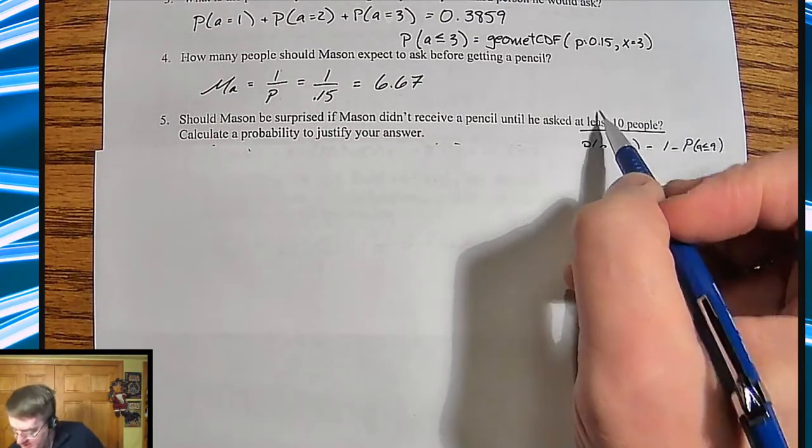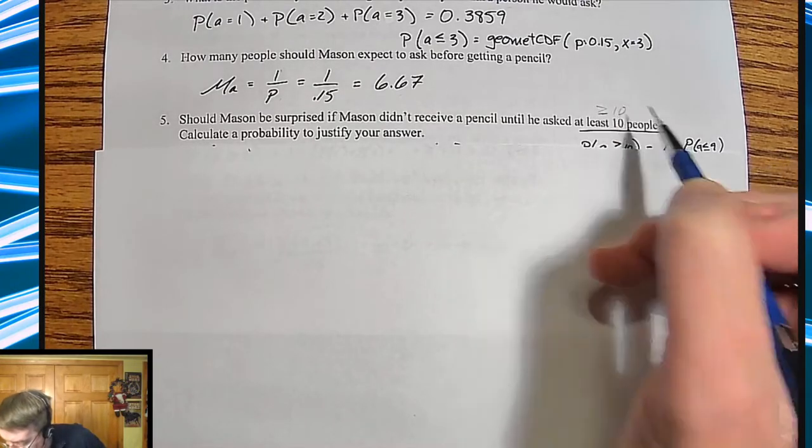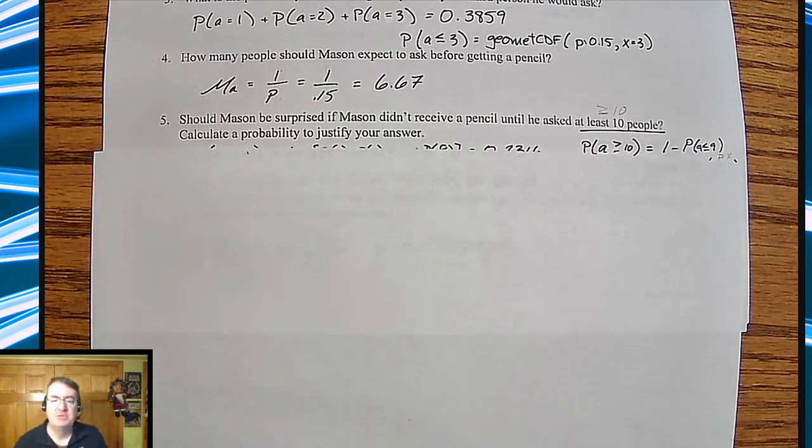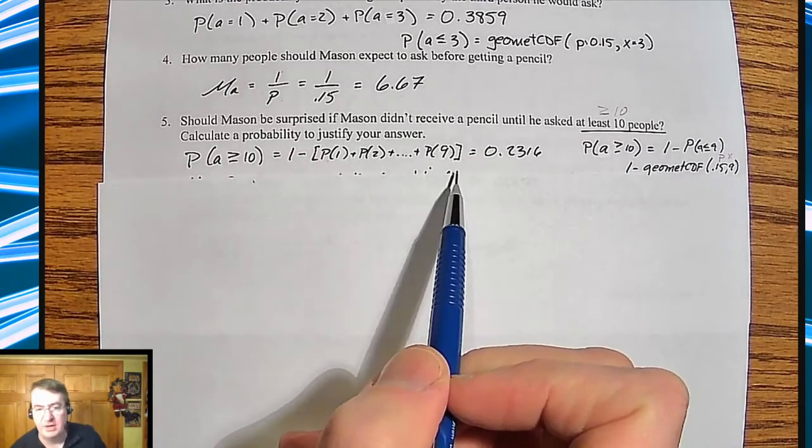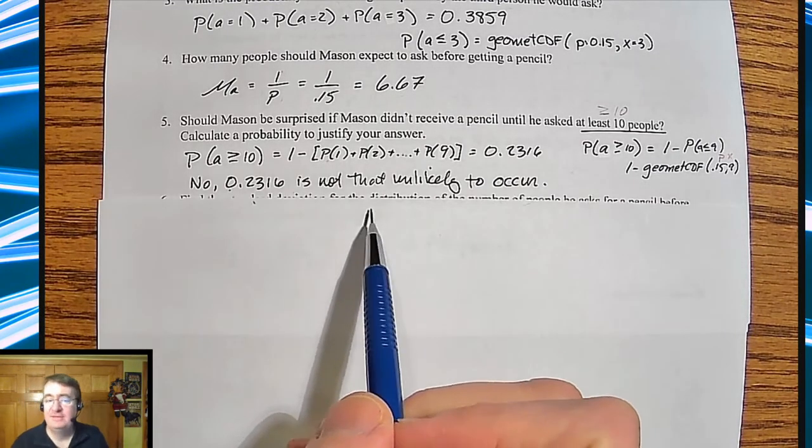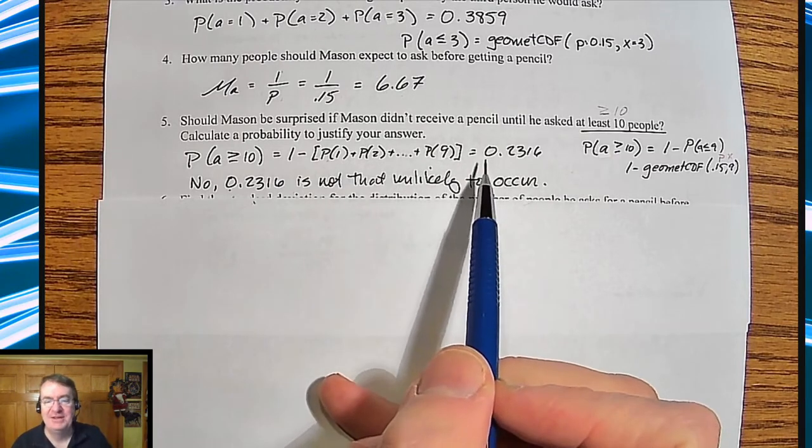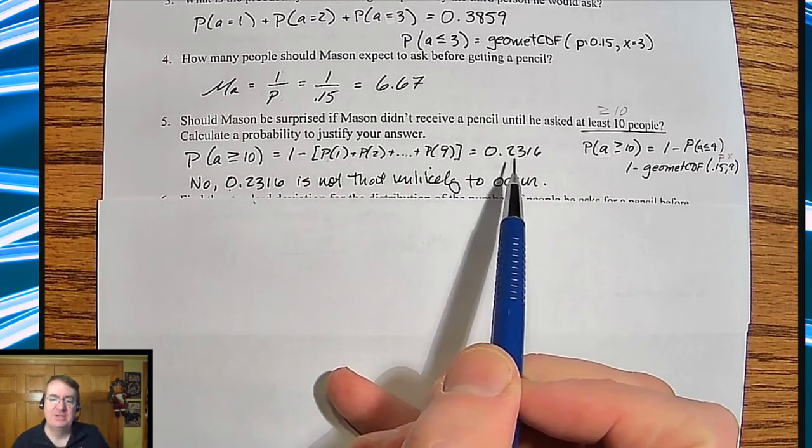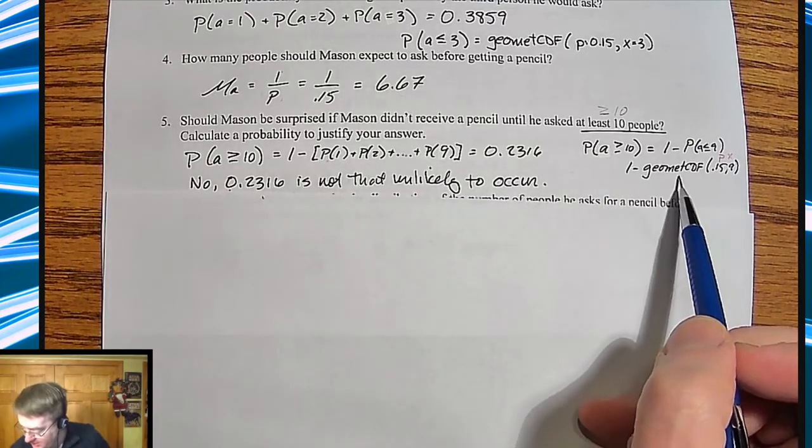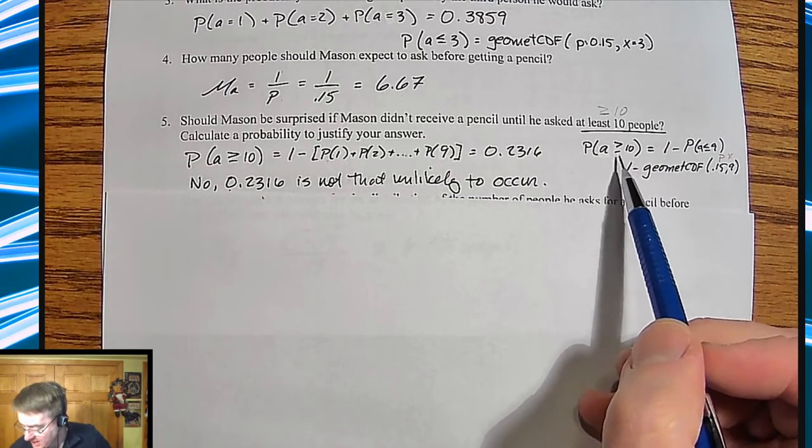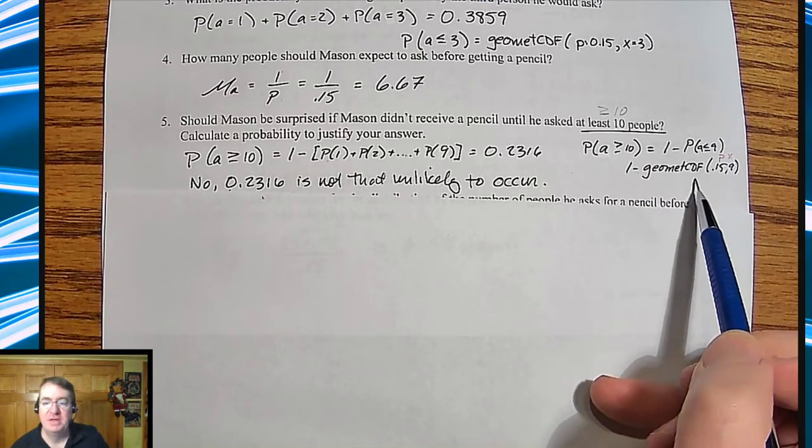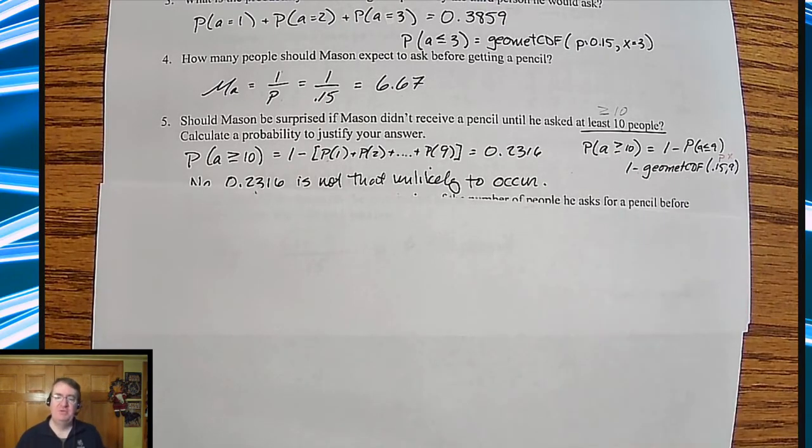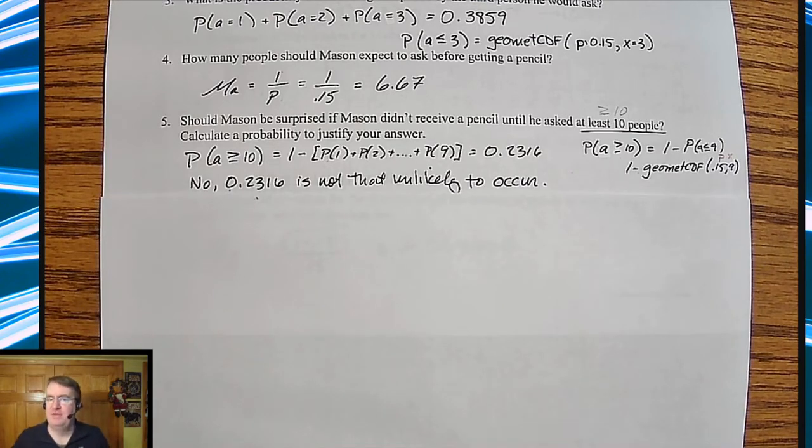Should Mason be surprised if he doesn't receive a pencil until he asks at least 10 people? Since it says at least 10 people, that means it has to be greater than or equal to 10 people. The probability of that, you can find all the individual probabilities of one through nine, and you're going to end up getting 0.236, so it takes about 23%. You could also do one minus the probability that asking is nine or less. No, it's not really all that unlikely that Mason will have to ask about half the class to get a pencil.